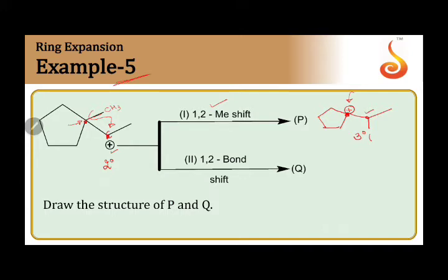Let's consider the second one: 1,2-bond shift. 1,2-bond shift is another name for ring expansion.